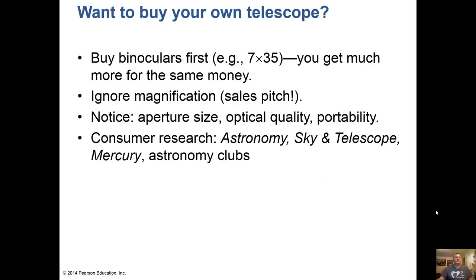What if you want to buy your own telescope? Buy binoculars first — maybe a 7x35 pair — you'll get much more for the same money. Ignore the magnification; it's a sales pitch. Notice the aperture size: an 8-inch is better than a 4-inch. Also consider optical quality and portability. Do your consumer research — look at magazines like Astronomy, Sky and Telescope, and Mercury, and check local astronomy clubs. We have the Springfield Astronomical Society and the Ozark Amateur Astronomers Club in Springfield.